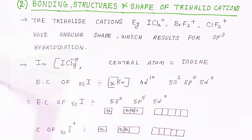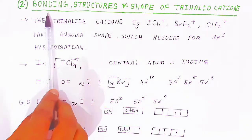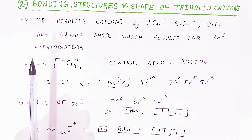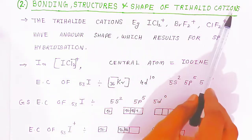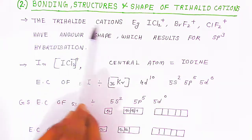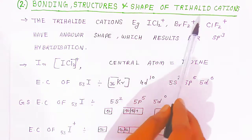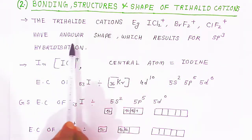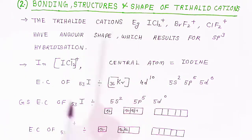Now we are going to see the bonding structure and shape of the trihalide cations. The trihalide cations like ICl₂⁺, BrF₂⁺, ClF₂⁺ have an angular shape, which results from sp³ hybridization only.